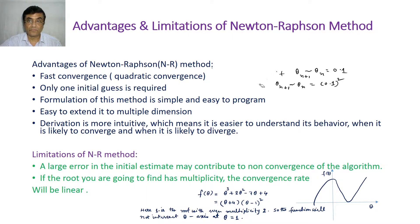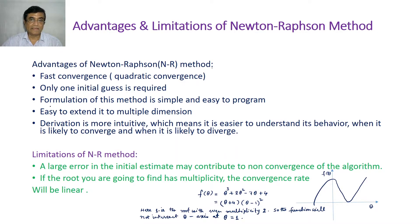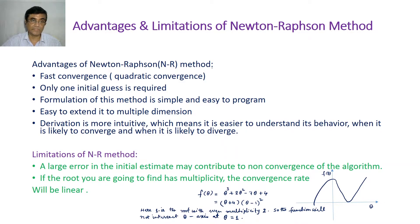This algorithm has the quadratic convergence property, which is good. Also, only one initial guess is required, although the guess has to be made judiciously — otherwise getting a solution will be difficult. The formulation of this method is easy; we showed using both Taylor series and geometry how easy it is to derive this algorithm.